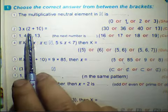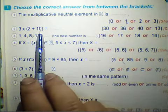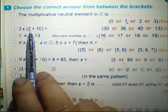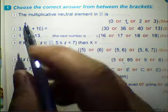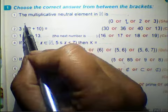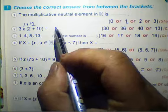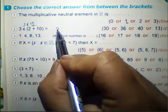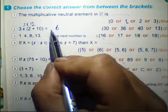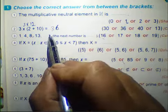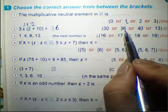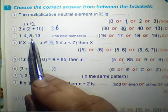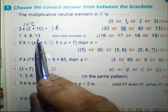3 multiplied by (2 plus 10) in brackets: 3 multiplied by 12. That equals 3 times 2 equals 6, 3 times 1 equals 3, so the result will be 36. The sequence is 1, 4, 8, 13.